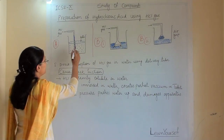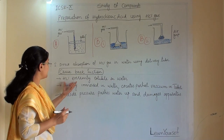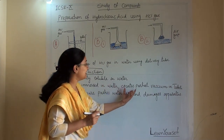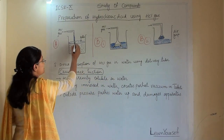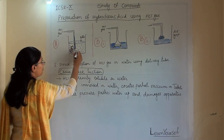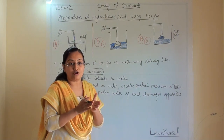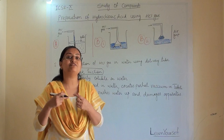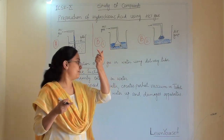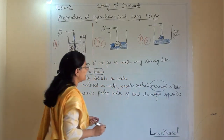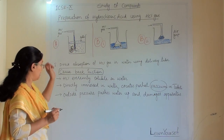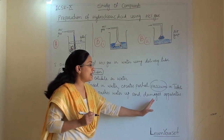This water will get into the delivery pipe. HCl is extremely soluble in water, so when the tube is directly immersed in the water it creates a partial vacuum in the tube. The HCl gas is rapidly dissolving, so the water will go up. The process of HCl gas getting soluble in water is very fast compared to the gas coming out from the pipe. Because there is a lack of air, the outside pressure pushes the water up and damages the apparatus.